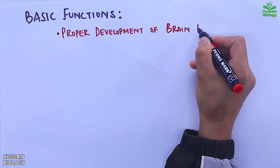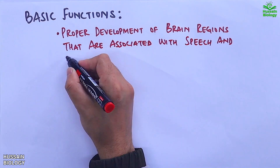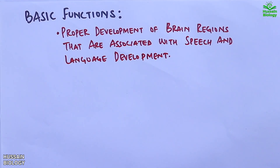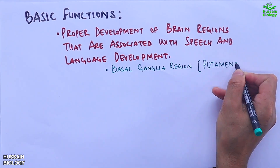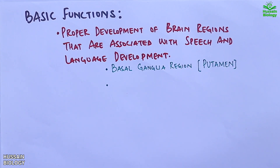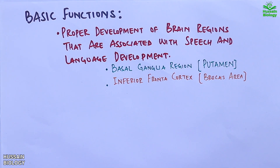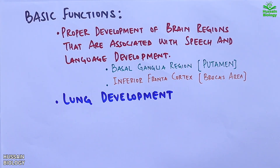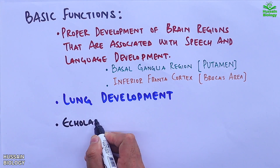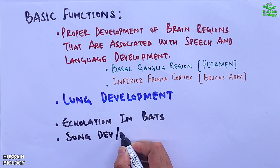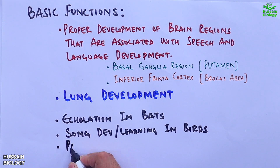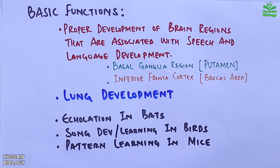Now let's see some basic functions of the FOXP2 protein. First, it aids in the proper development of brain regions associated with speech and language, specifically the basal ganglia — particularly the putamen — and the inferior frontal cortex, specifically Broca's area. It is also involved in lung development, echolocation in bats, song development and learning in birds, and pattern learning in mice.